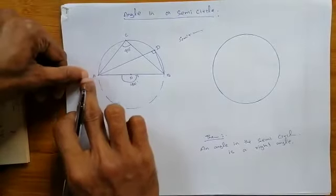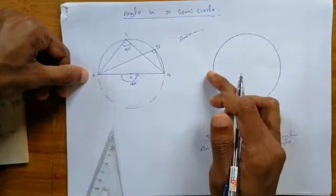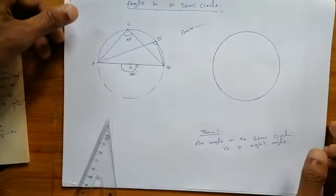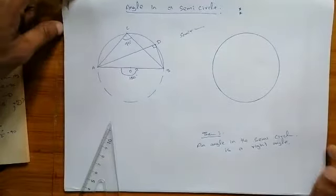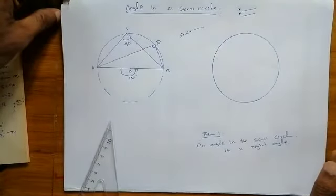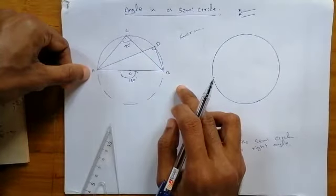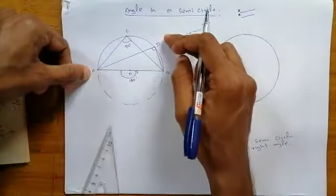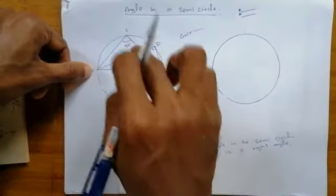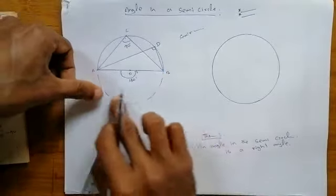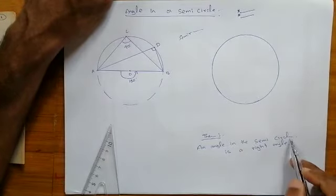When you consider an angle on a semi-circle, we ask: who is going to subtend the angle, and where is the angle subtended? The remaining semi-circular arc subtends the angle. The center angle is 180 degrees, so the subtended angle on the semi-circle should always be 90 degrees. Because the semi-circle is subtending, the angle in a semi-circle is always a right angle.